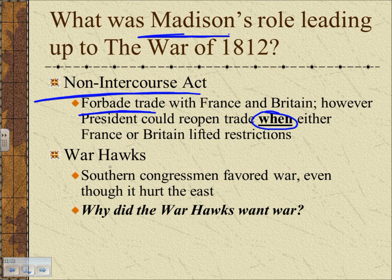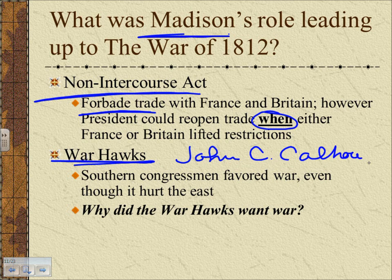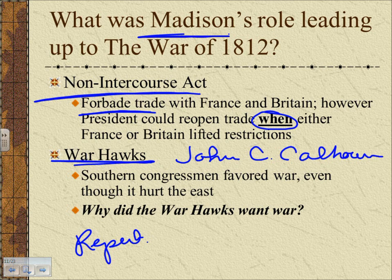Also in the South, you had the Warhawks — people such as John C. Calhoun, who becomes important later for nullification — calling for war. Most of these congressmen were Republicans, or Democratic Republicans. They didn't ally with the Federalist pro-British sympathies. It was a political division in America, which is why you had one party promoting war and another party not.